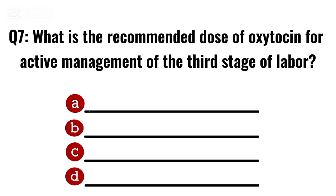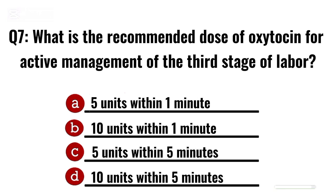Question 7. What is the recommended dose of oxytocin for active management of the third stage of labour? Correct option B: Ten units within one minute.